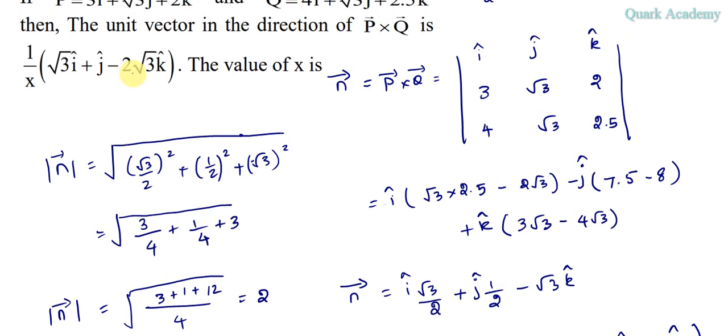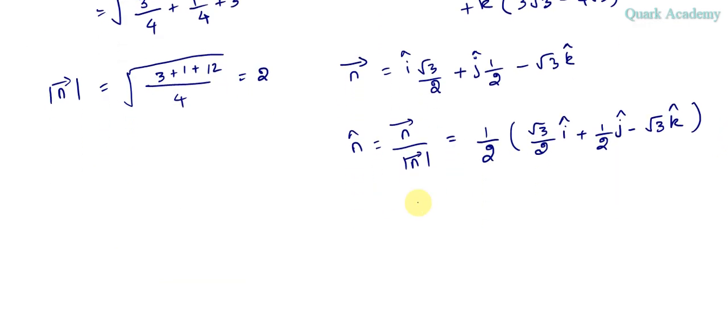Look at the option, I mean the part of the question. What they have given us: root 3 i cap plus j cap negative 2 root 3 k cap, which means there is nothing in the denominator. So here there is nothing, you have to bring that out of the bracket. So let's do that.